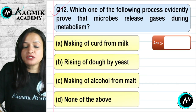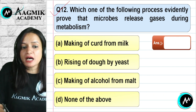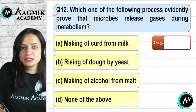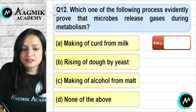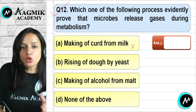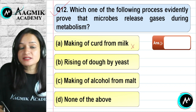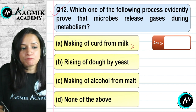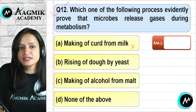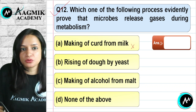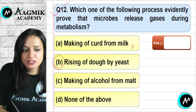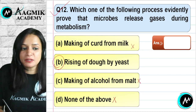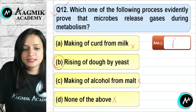Question number 12: Which process evidently proves that microbes release gases during metabolism? Making curd from milk (lactose to lactic acid) does not produce CO2. Rising of dough by yeast (Saccharomyces cerevisiae, also called brewer's yeast) produces a heavy amount of CO2, making the dough soft and fluffy. Making alcohol from malt does not produce gases. The correct option is B.